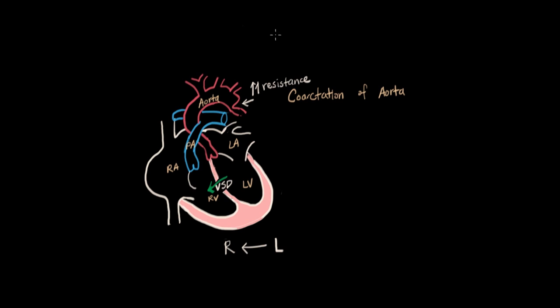So let's say we don't fix this coarct. No surgery. This child grows up. I mean they'll have kind of compromised flow of blood into their system. But they can survive. Now all the while we have left to right shunting. We can live with that.